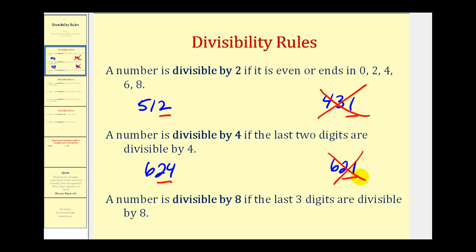Next, we'll take a look at the number 8. A number is divisible by 8 if the last 3 digits are divisible by 8. I don't use this rule very often because it's often hard to tell whether a 3-digit number is divisible by 8. However, if we have a number like 5088, the last 3 digits would be 088, and since 88 is divisible by 8, then so would 5088.